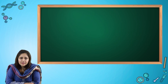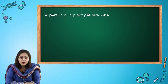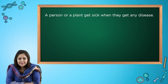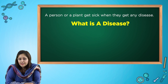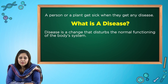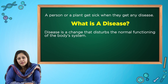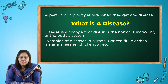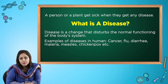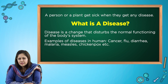Now how do we get sick? A person or a plant gets sick when they get any disease. So you must be thinking, what is a disease? Diseases are basically changes that disturb the normal functioning of the body's system. Some examples of diseases in humans are cancer, flu, diarrhea, malaria, measles, and chicken pox.